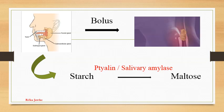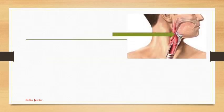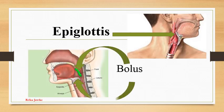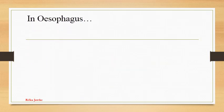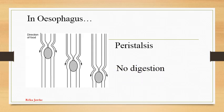The pharynx is a common area to both the respiratory system and digestive system. While moving through the pharynx, there is a part called the epiglottis, present above the opening of the trachea, which prevents the bolus from entering the trachea. When the bolus is passed to the esophagus, it is a constricted tube where food is passed by peristalsis movement. No digestion takes place in the esophagus.